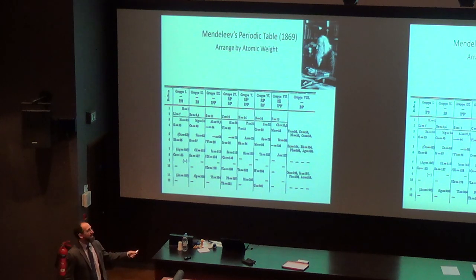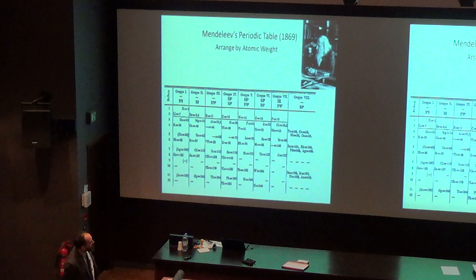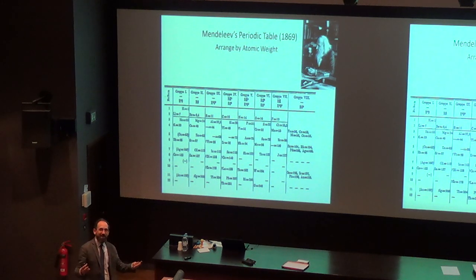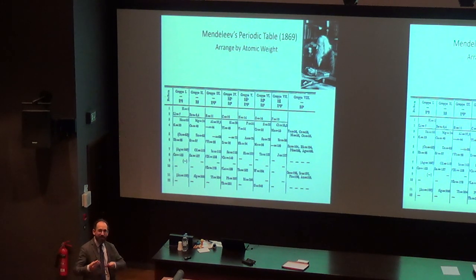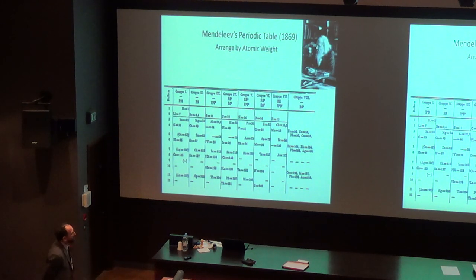Interestingly, Mendeleev never won a Nobel Prize, even though he was eligible many, many times. This was because his archenemy, Serge Arrhenius, had a lot of influence over the Swedish Academy and prevented him from ever winning — but that's a bit of a different story.